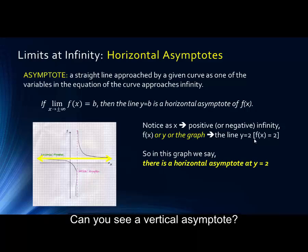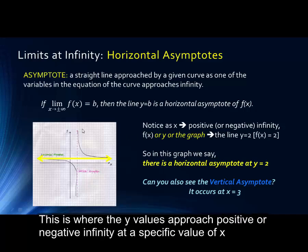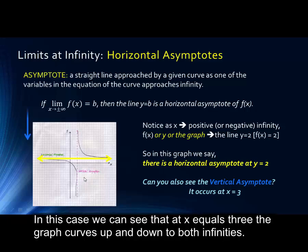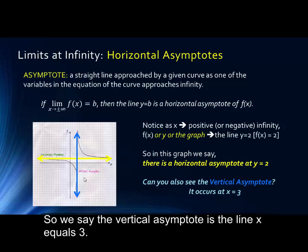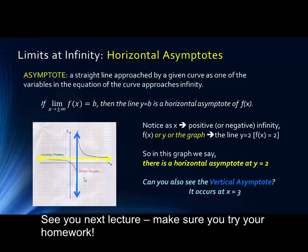Can you see a vertical asymptote? This is where the y values approach positive infinity or negative infinity at a specific value of x. In this case, we can see that at x equals 3, the graph curves up and down to both infinities. So we say the vertical asymptote is the line x equals 3. See you next lecture. Make sure you try your homework. Thank you.